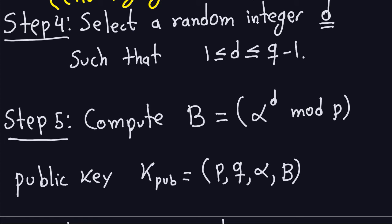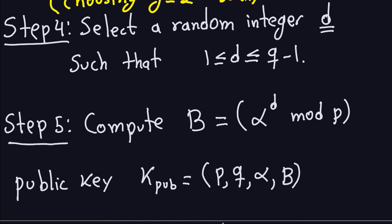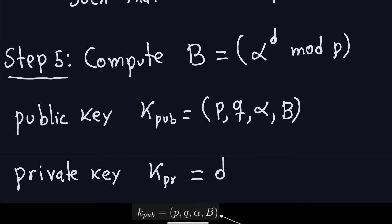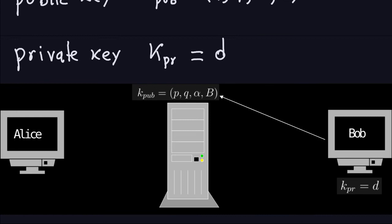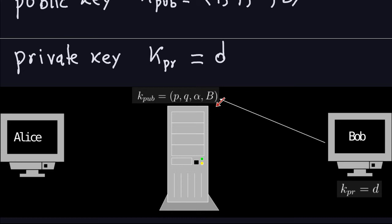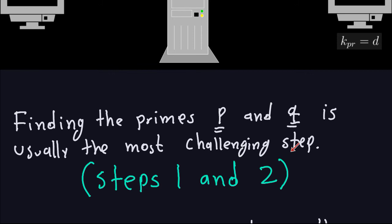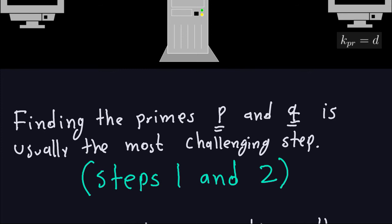The public key consists of four numbers: P and Q (from steps one and two), alpha (from step three), and B (from step five). The private key is the random number D chosen between 1 and Q−1. Bob publishes the public key — P, Q, alpha, and B — and keeps D secret so only he can sign messages. Finding the primes P and Q remains the most challenging part.